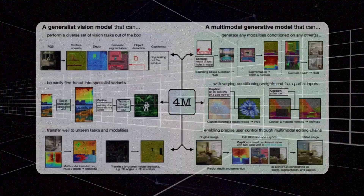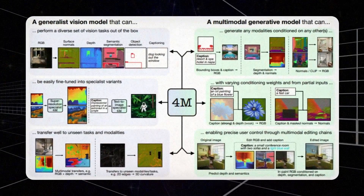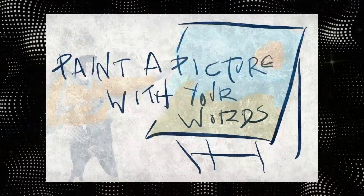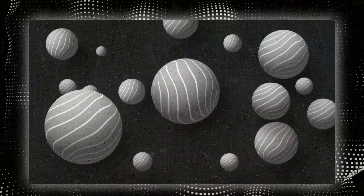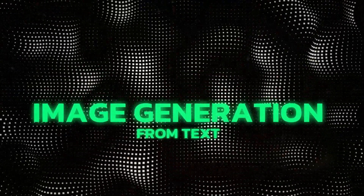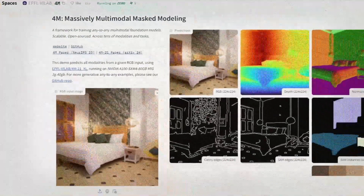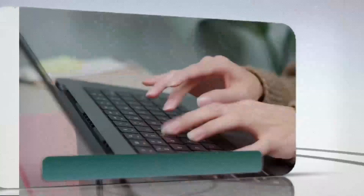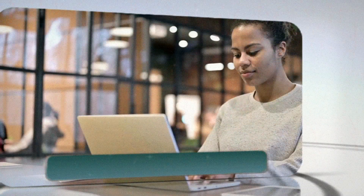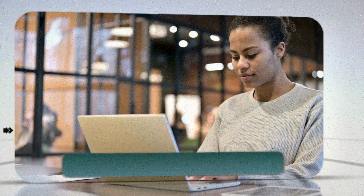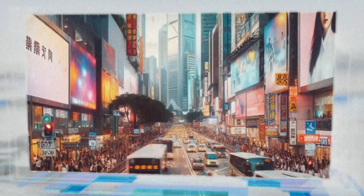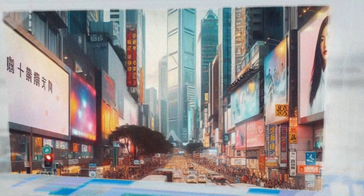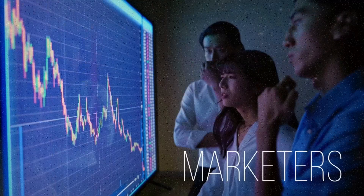The Apple 4M is multimodal, which means it can understand and generate content in various formats. Imagine it as a versatile artist that can paint with words, create visual scenes, and even sculpt 3D shapes. One cool feature is its ability to create images based on text descriptions — describe a bustling city street and the 4M creates a vivid image capturing that urban scene. This is handy for graphic designers, marketers, and content creators who want quick visuals without being expert artists.